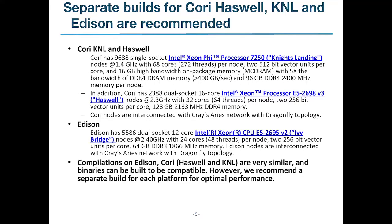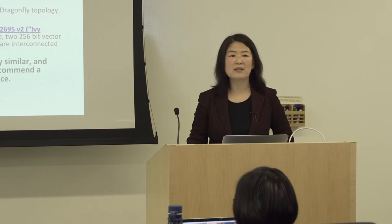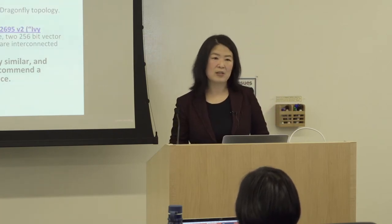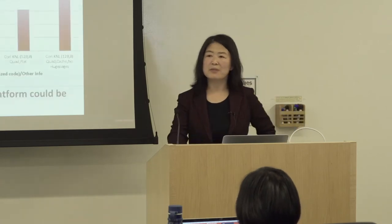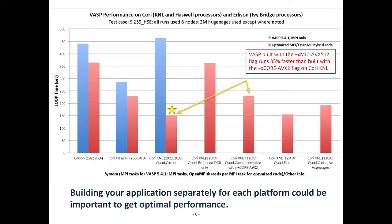This is the Cori and Haswell configuration. I want to emphasize that Cori, Edison, and especially KNL have sufficiently different architectures, so they deserve separate builds for each platform. We have some benchmark data to back that up — this is a slide we prepared for another purpose, but I want you to look at the two red bars.